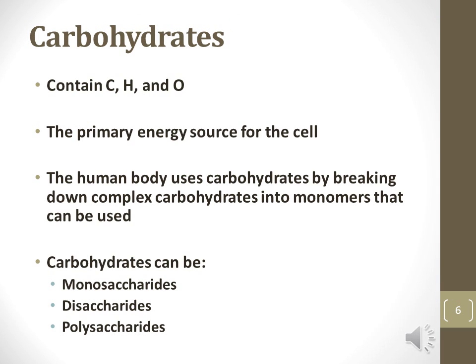Carbohydrates contain carbon, hydrogen, and oxygen, and they are the primary energy source for the cell. Glucose is an important carbohydrate. The body uses carbohydrates by breaking down complex carbohydrates into monomers, then converting those monomers into energy via cellular respiration. Carbohydrates may be in the form of a singular monomer such as glucose, two monomers put together — a disaccharide like sucrose — or a polysaccharide like the starches.